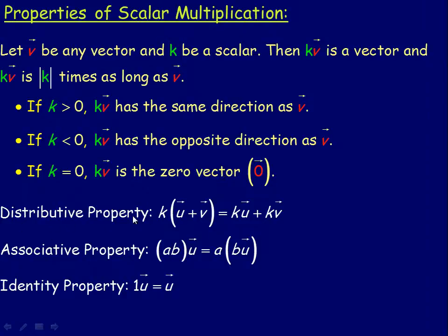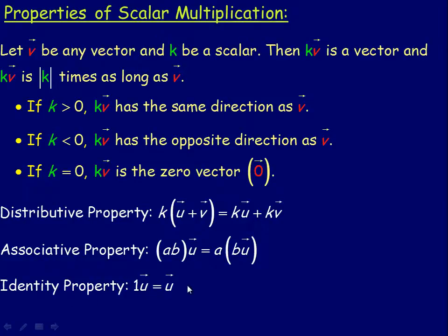These are some algebraic properties of scalar multiplication. The first is the distributive law: if we have a scalar multiplied by a vector sum, then k gets multiplied by u — giving ku — plus k times vector v. The associative property says that a times vector u, multiplying a and b first and then by vector u, is the same as taking vector u, multiplying by scalar b, then multiplying by a. The identity property says that 1u equals u — the scalar 1 times any vector is the same vector.